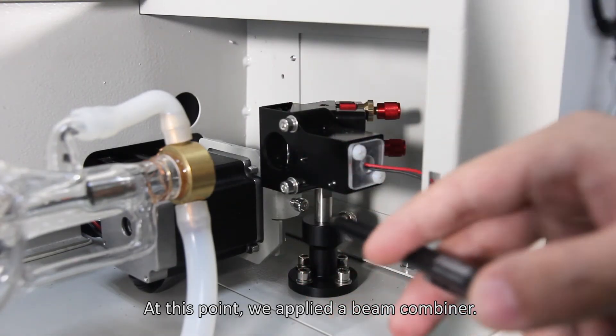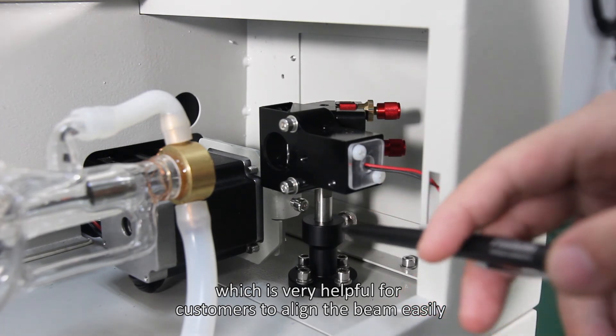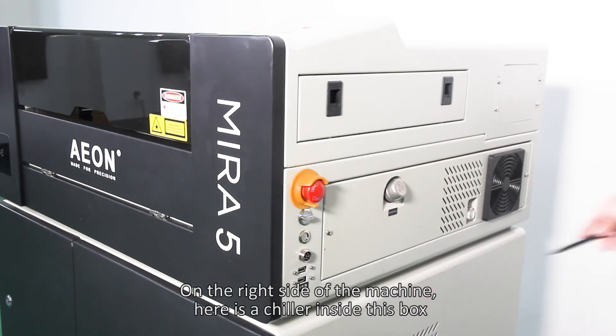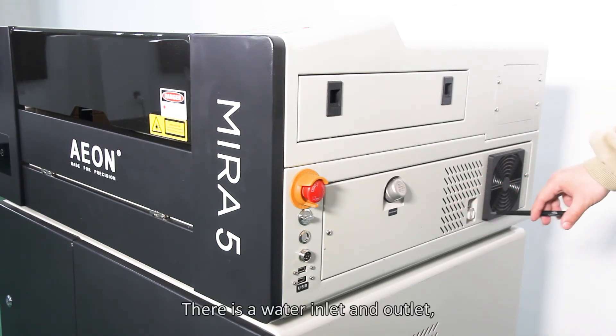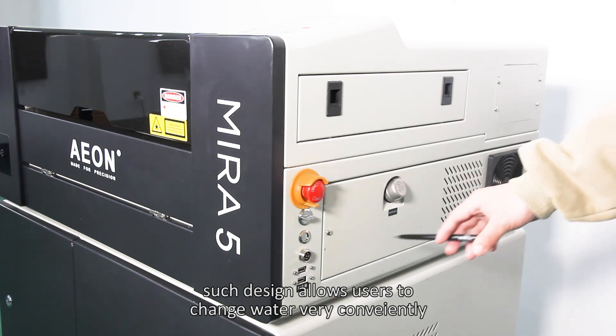At this point, we applied a beam combiner, which is very helpful for customers to align the beam easily. On the right side of the machine, here is the chiller inside this box. There is a water inlet and outlet. This design allows users to change water very conveniently.